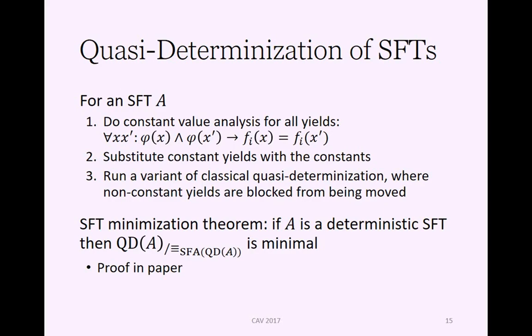If we find such constants then we substitute them in for the yield formulas and then we can run a variant of this classical quasi-determinization algorithm where we block non-constant yields from being moved. With this, if we have a deterministic symbolic finite transducer, then first doing the quasi-determinization and then doing the control state reduction method through the encoding will give us the minimal results. We have a proof of this in the paper, and this is mirroring the minimization result for classical transducers.